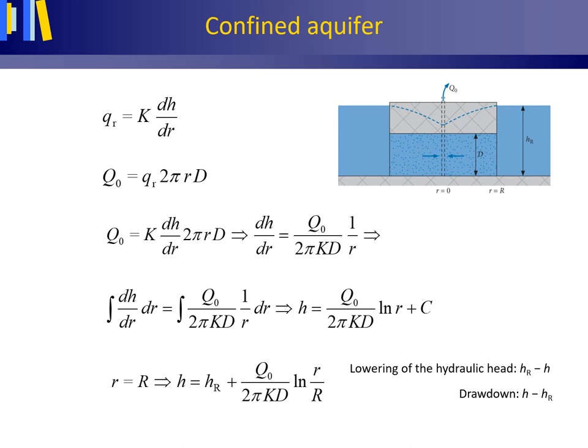Using the Dupuis equation, the lowering of the hydraulic head — h_R minus h — for a pumping well can be determined for every radial position r between r equals r_w (the outside of the pumping well) and r equals large R. It is clear that for a pumping well the drawdown, defined as h minus h_R, has a negative value since h is smaller than h_R.